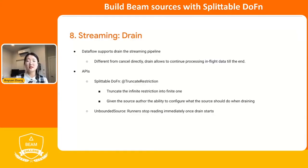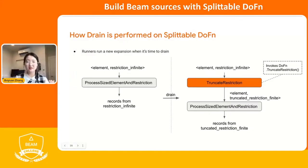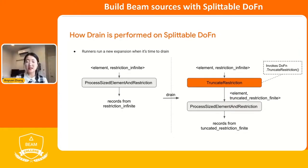After you define this function, how does it get invoked by the runners? The runner does another round of graph expansion. The left side is the normal process element steps, and it keeps processing until you click the button on the Dataflow UI to drain. After the runners get the drain signal, they change that portion of the graph by inserting a truncate restriction step right before the process element and restriction step. The truncate restriction invokes your defined function, which cuts the given restriction into a finite one, and then populates it into the process element again to have it finish processing.